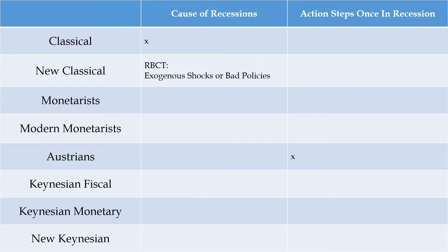First up is the new classical school, and in particular a subgroup called real business cycle theory. The way we can understand the cause of recessions with real business cycle theory is through a metaphor. The new classicals and real business cycle theorists believe that we have a car as our economy, and the car runs really, really well. However, every now and then we can have bad performance.